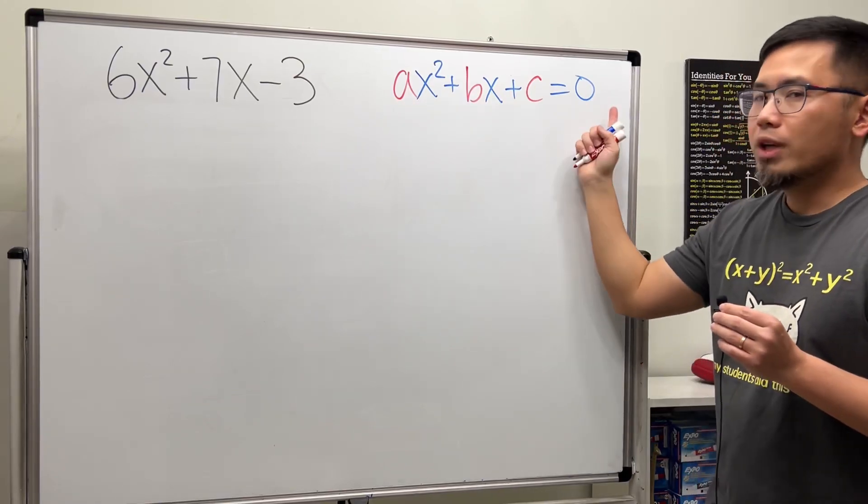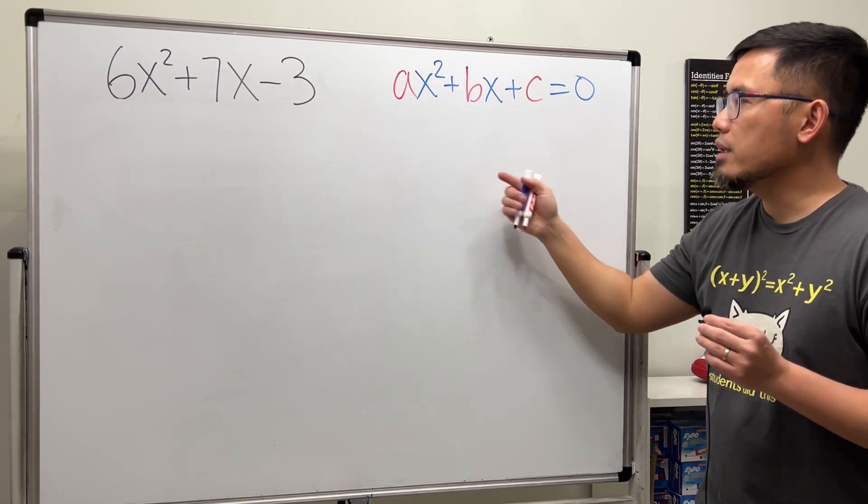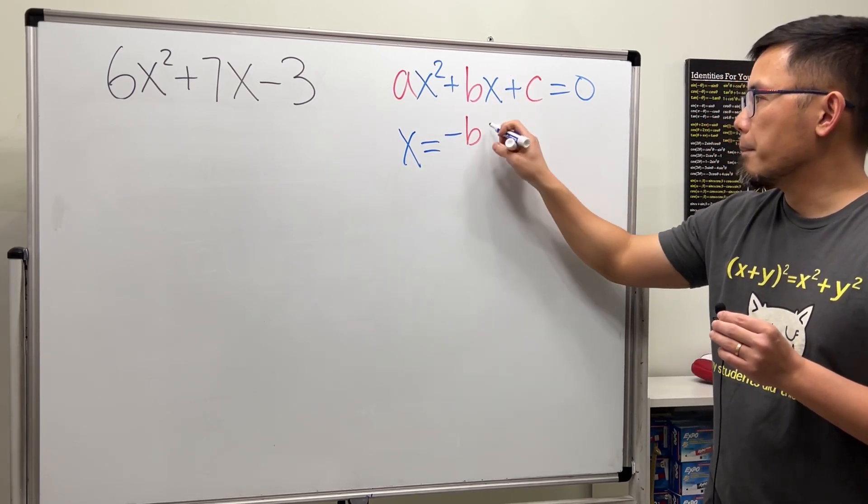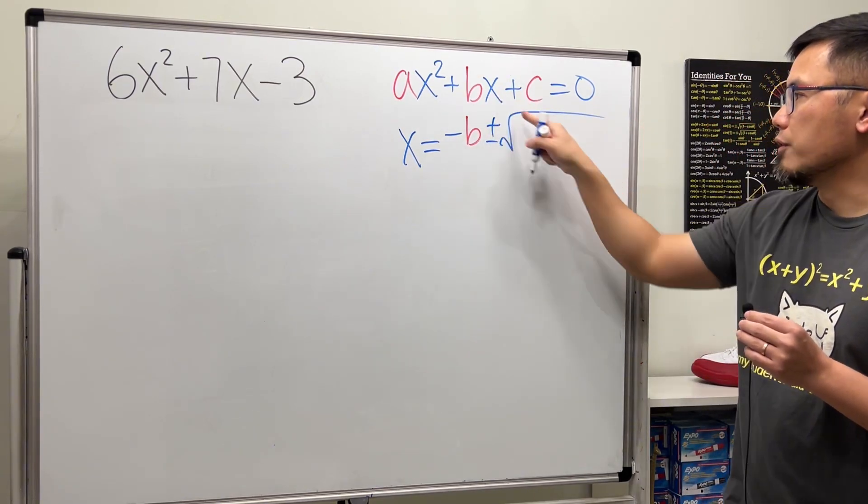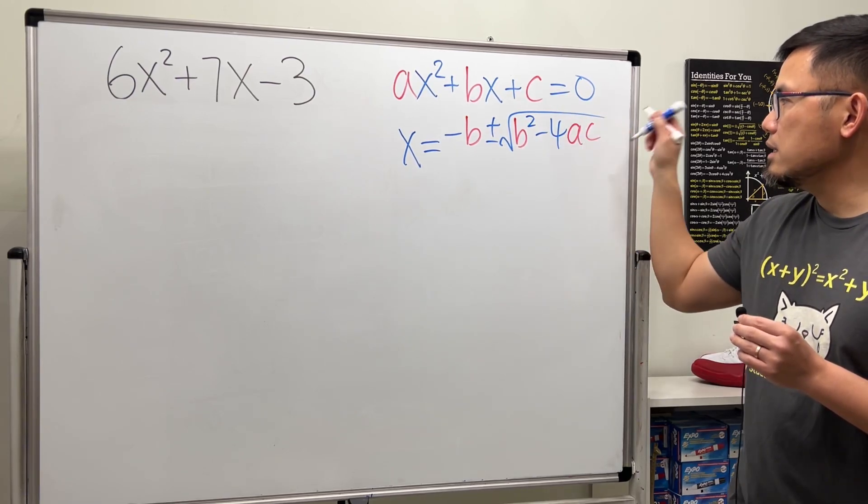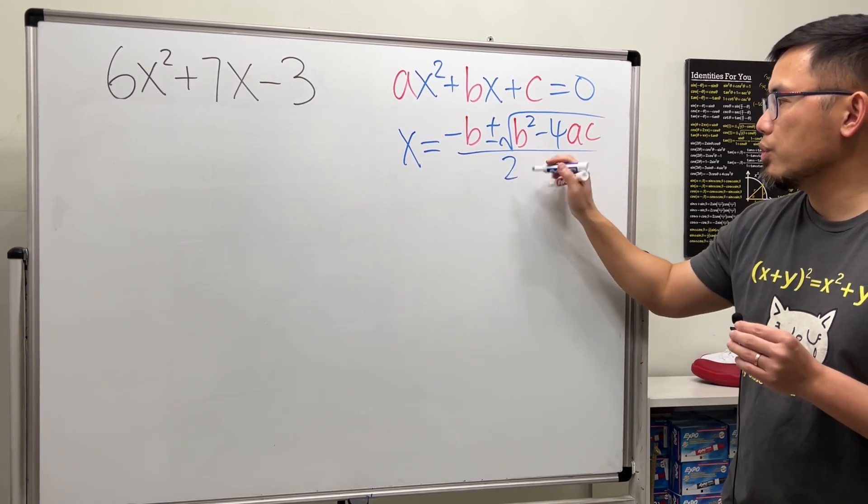Anyway, if we have a standard quadratic equation, then we know that by the quadratic formula, x equals negative b plus or minus square root of b squared minus 4ac over 2 times a.